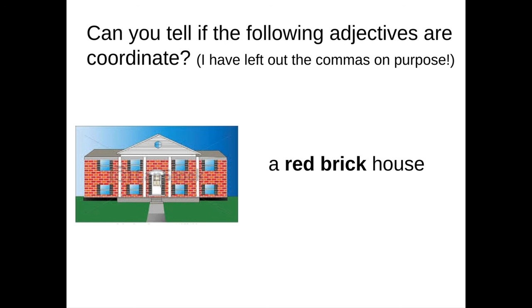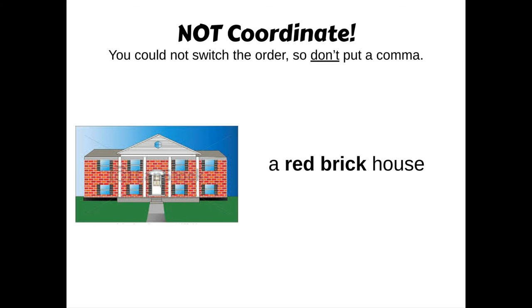Let's try another one. 'She lives in a red brick house.' Would red and brick be coordinate? Do the test in your head. Those are not coordinate — you could not switch the order, so don't put a comma. If you said 'a brick red house,' that changes the meaning. Brick red is actually a color in the crayon box, so it totally changes the meaning. I cannot change the order of 'red brick house.' Brick is the more important adjective; it needs to stay by house. No comma.